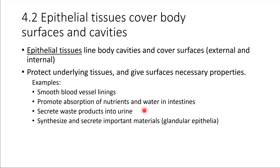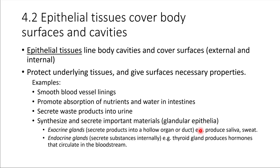Epithelial tissue also does a great job of synthesizing and secreting important materials. If this is the job — to synthesize and secrete — then we would say that this type of epithelia is glandular. Think of a gland: it secretes something. There are two major categories of glands: exocrine glands and endocrine glands.